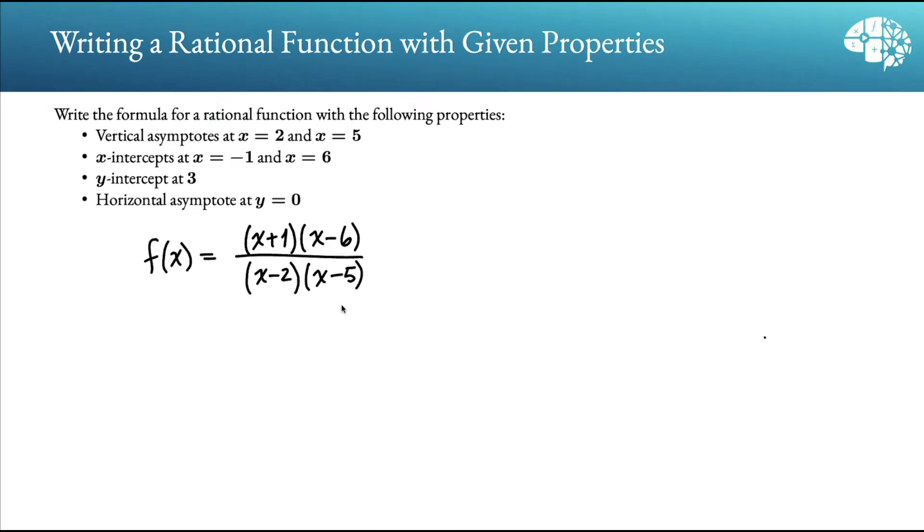Now there's a couple things to consider here. First of all, I'll talk about the horizontal asymptote. Because the horizontal asymptote is y equals 0, that means the degree of the denominator needs to be larger than the degree of the numerator. Right now, both numerator and denominator have a degree of 2, so they're equal here.